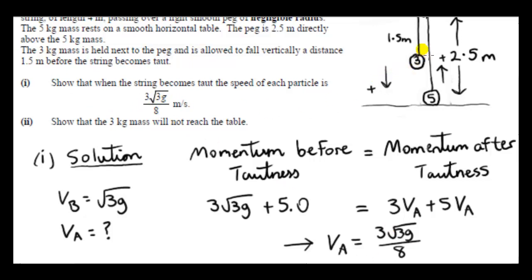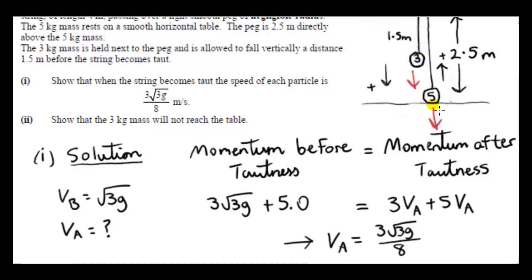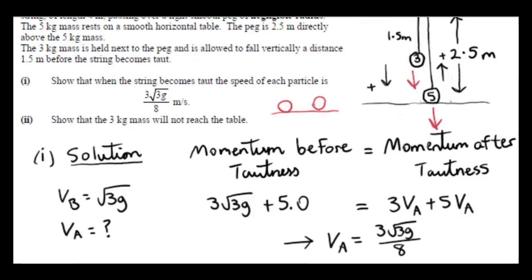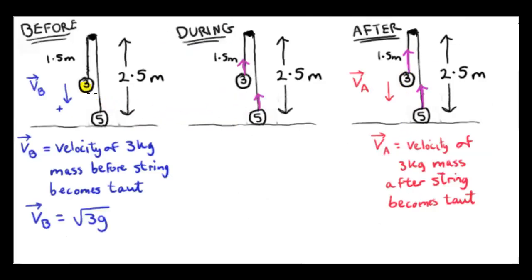The big question is: why does conservation of momentum work in the vertical direction here? We do have an external force — gravity — acting on both particles in the direction of motion, which is usually a problem. Normally we apply momentum conservation only when external forces are perpendicular to the direction of motion, as with two objects on a smooth surface. Here the internal string forces are aligned with gravity, so the situation is quite different.